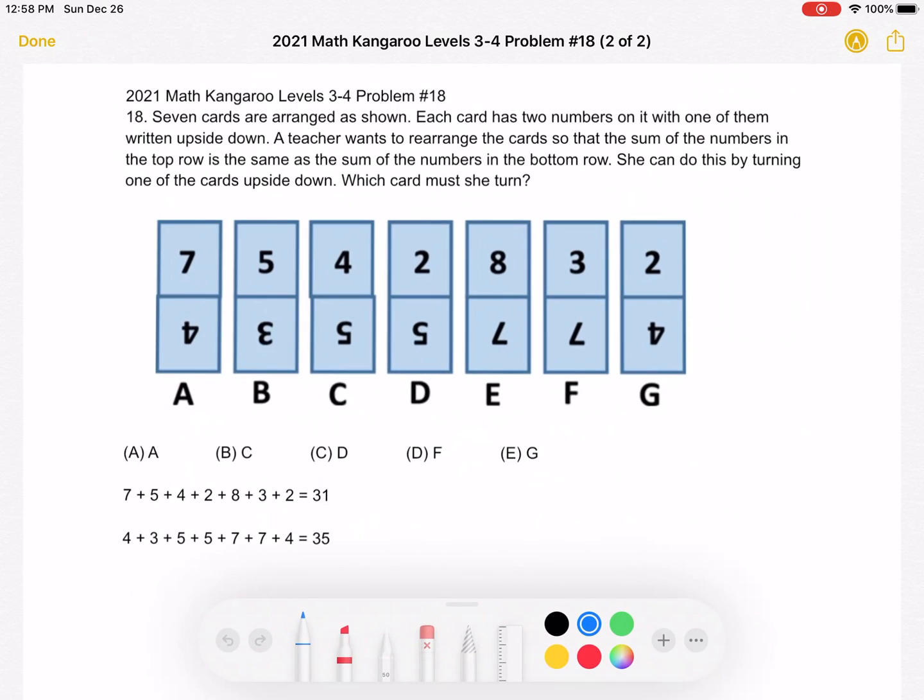So I started by finding the sum of the numbers in this top row. We have 7 plus 5 plus 4 plus 2 plus 8 plus 3 plus 2, which is equal to 31.